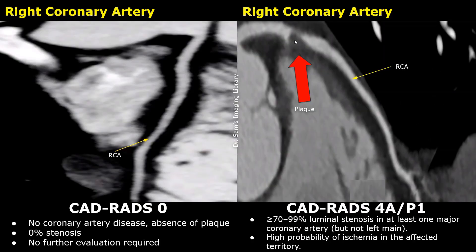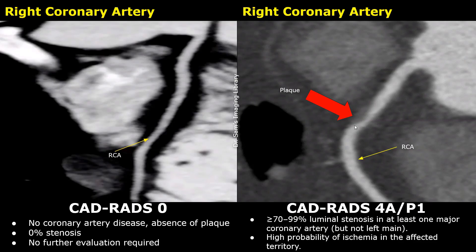Here is another case showing a CADRADS-4 lesion — a low-density plaque in the right coronary artery causing severe stenosis, which seems to be between 70 and 99%. A very small area is unobstructed, and the artery enhances normally distal to the plaque. So this is not an occlusion. Plaque burden is P1 because only one segment contains a plaque. This plaque is also causing severe stenosis, falling into the CADRADS-4 category.